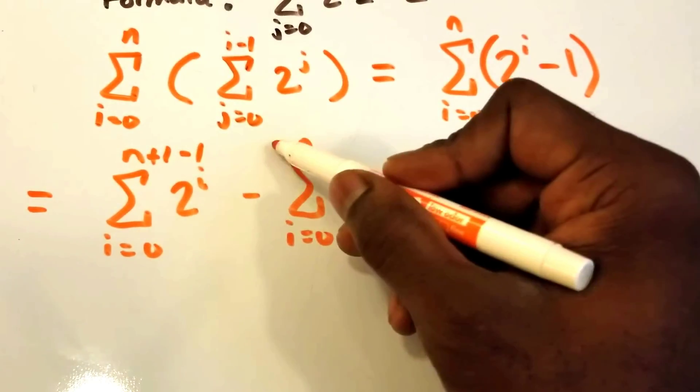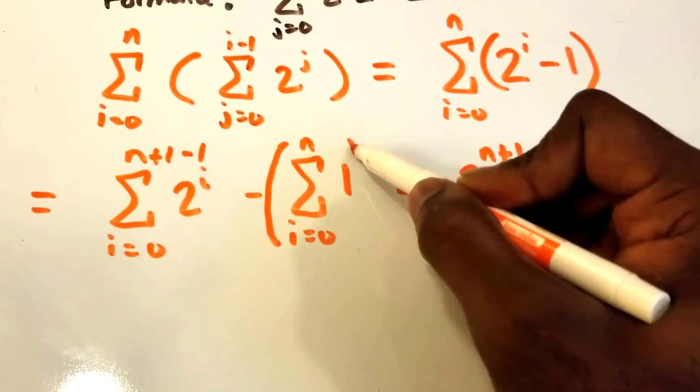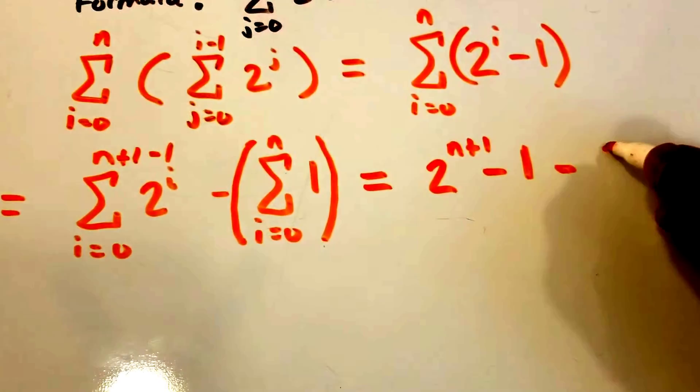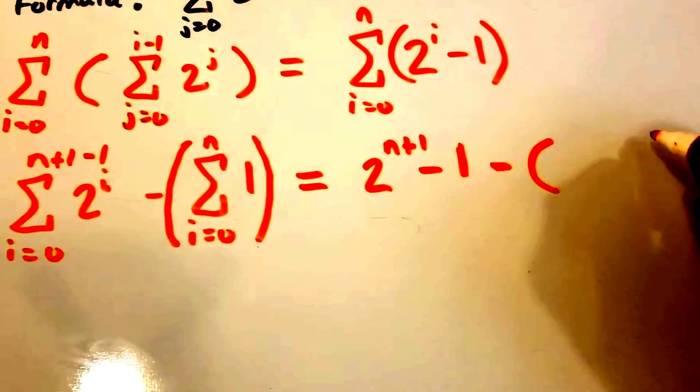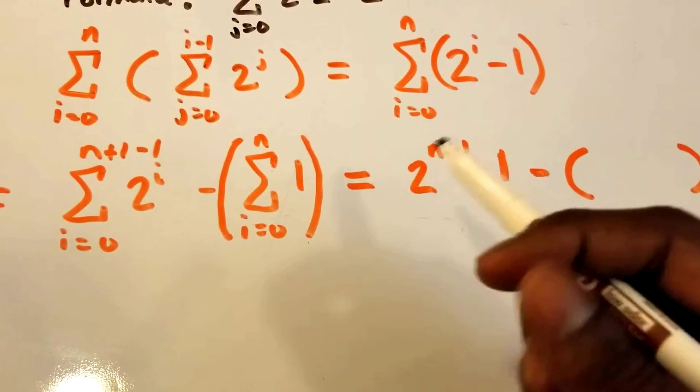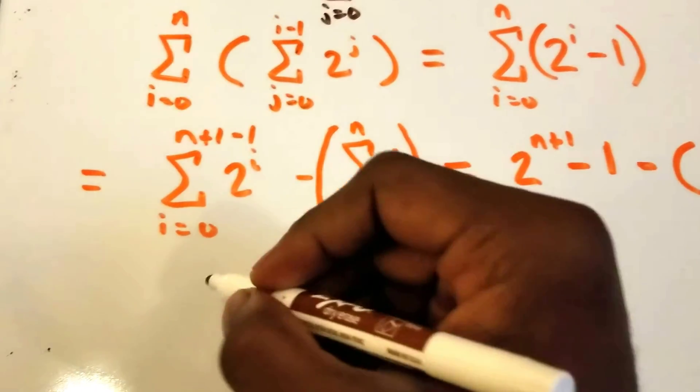Then we have a minus sign here, so we're going to subtract whatever this summation equals. I'm going to put a minus here, then these parentheses as well. What does that right summation equal?